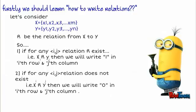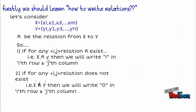Similarly, if relation does not exist, then we are going to write 0 in ith row and jth column. Here we write 1 where relation exists and we write 0 where relation does not exist.